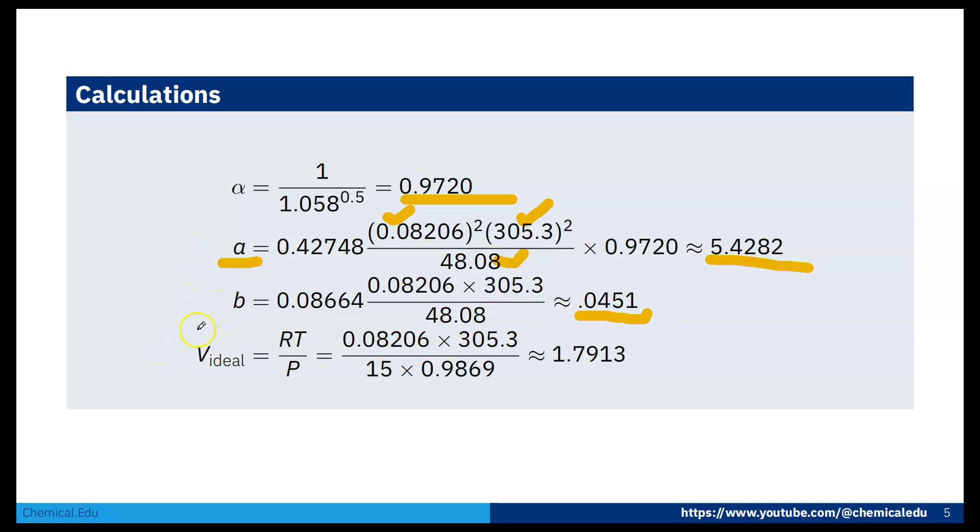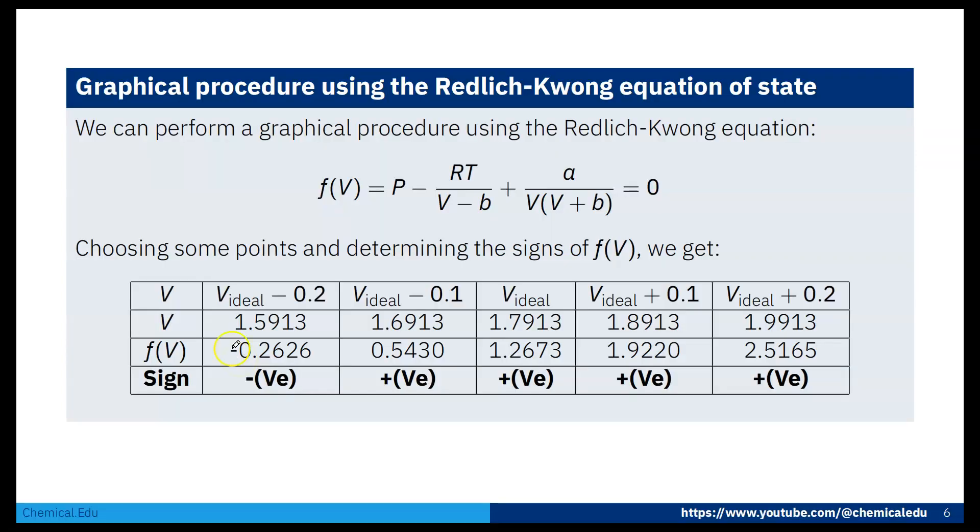So we got constants A and B. Before going to the Redlich-Kwong equation, first we calculate the ideal molar volume: RT over P. If I put all this, that will be 1.7913, the ideal volume.